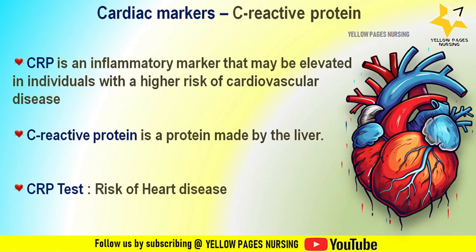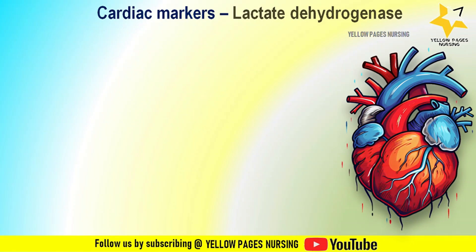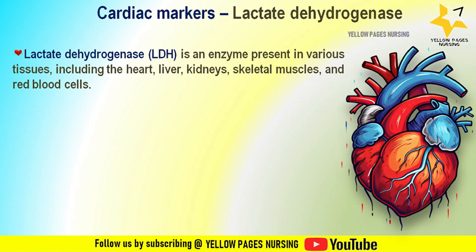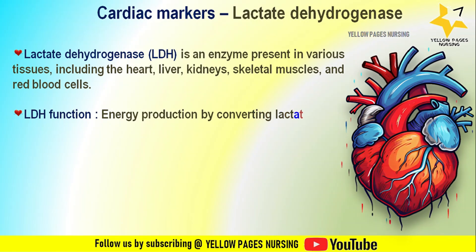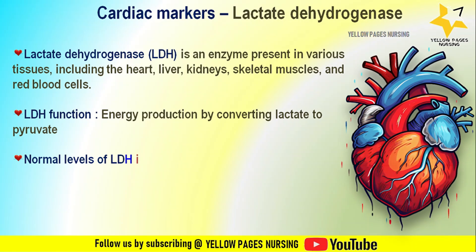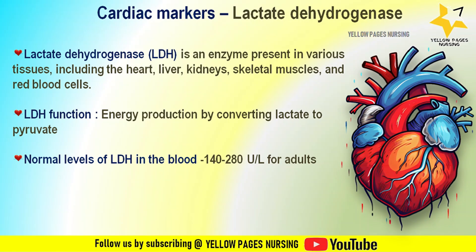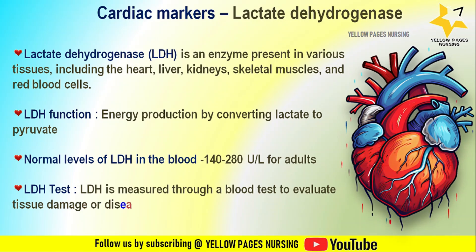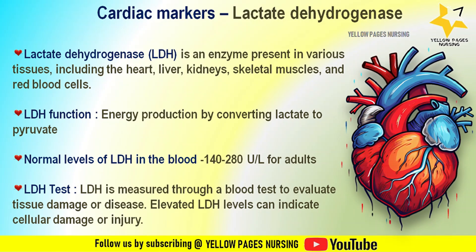Lactate dehydrogenase (LDH) is an enzyme present in various tissues including the heart, liver, kidneys, skeletal muscles, and red blood cells. Its main function is energy production by converting lactate to pyruvate. Normal LDH levels in the blood usually range between 140 to 280 units per liter for adults. Elevated LDH levels can indicate cellular damage or injury, such as in cases of myocardial infarction, liver disease, muscle injury, or certain cancers.